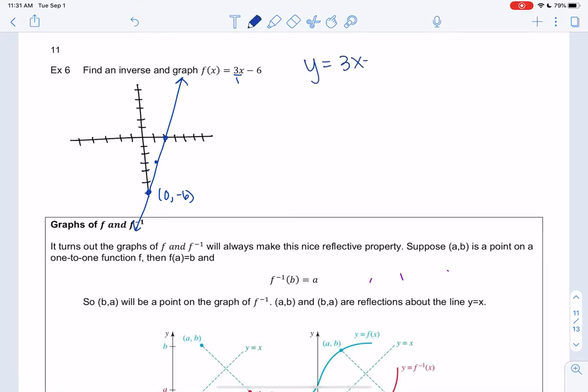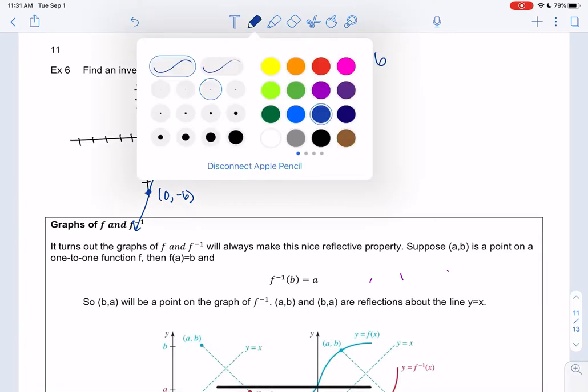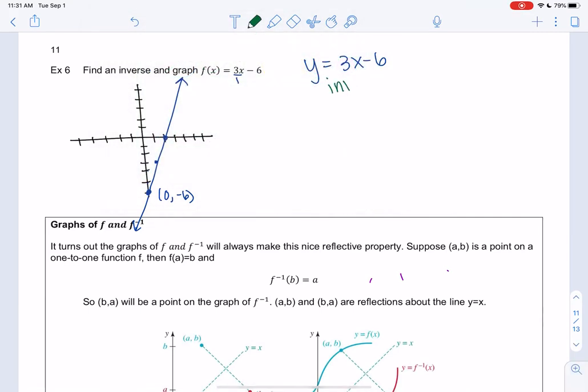Let's find the inverse. Start with y = 3x - 6. To find the inverse, we switch them, so x = 3y - 6. Then we solve for y. Add 6 to both sides: x + 6 = 3y. Divide by 3, so y = (1/3)x + 2.